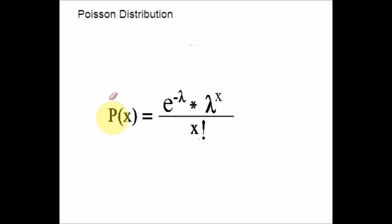Poisson Distribution is generally denoted by P of X. You can look at this formula. We have lambda, capital X, small x in this formula. I will explain you what this formula is denoting.